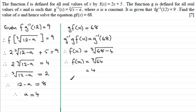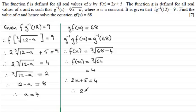The cube root of 64 is 4. So f(x) = 2x + 5 must equal 4. Subtracting 5 from both sides gives 2x = -1. Dividing both sides by 2 gives x = -½. That's a nice quick way of doing that question.